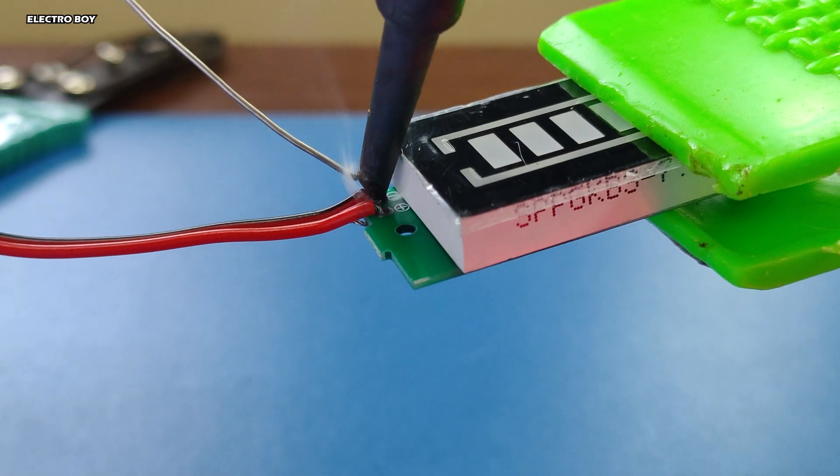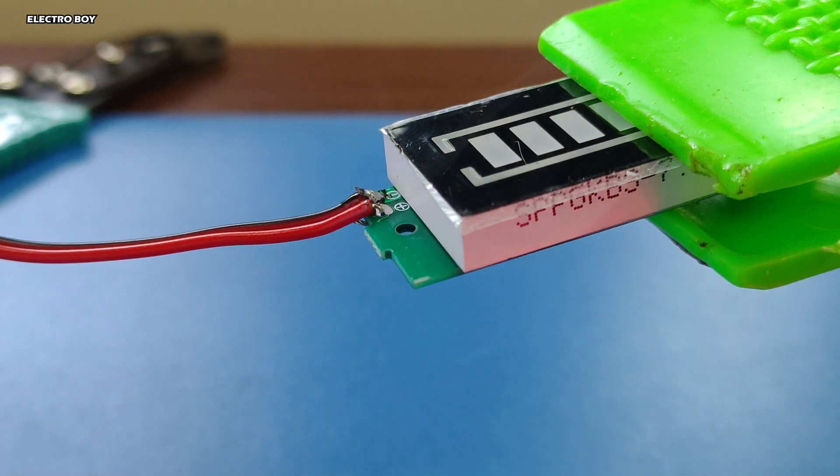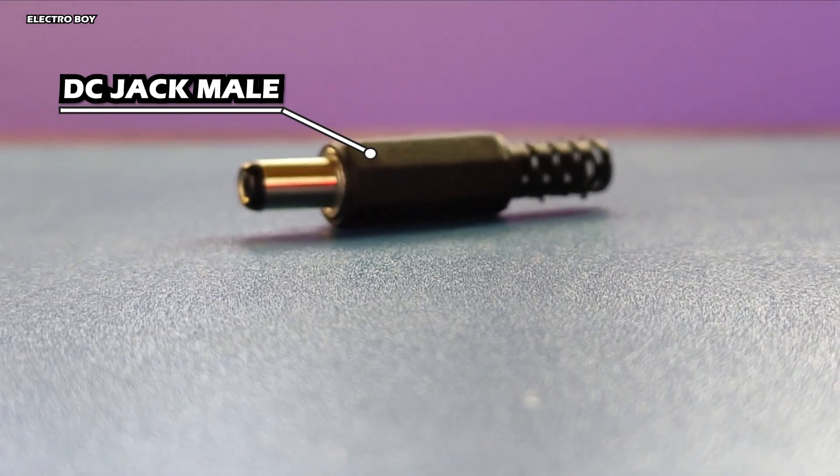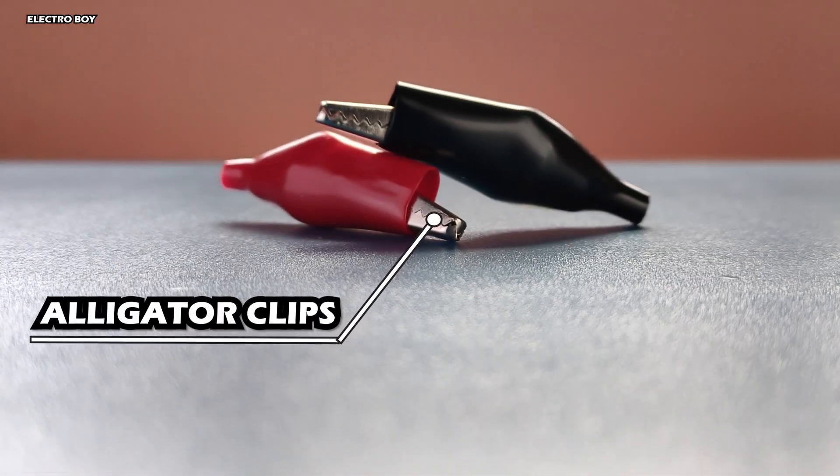Now we can solder some wires for connecting it with the BMS. I've used a male DC jack and alligator clip for making the test leads.